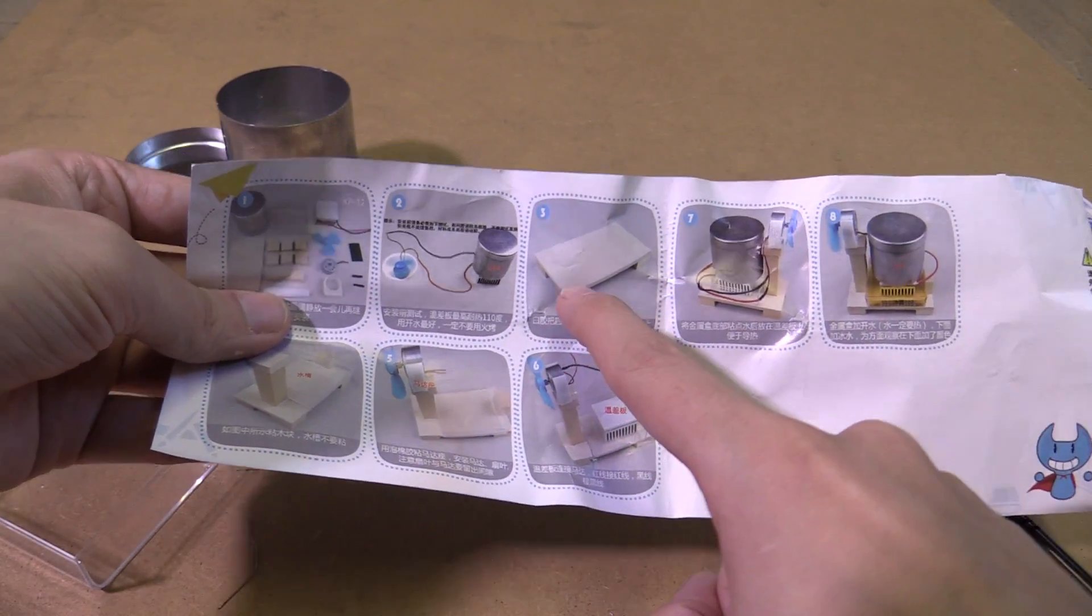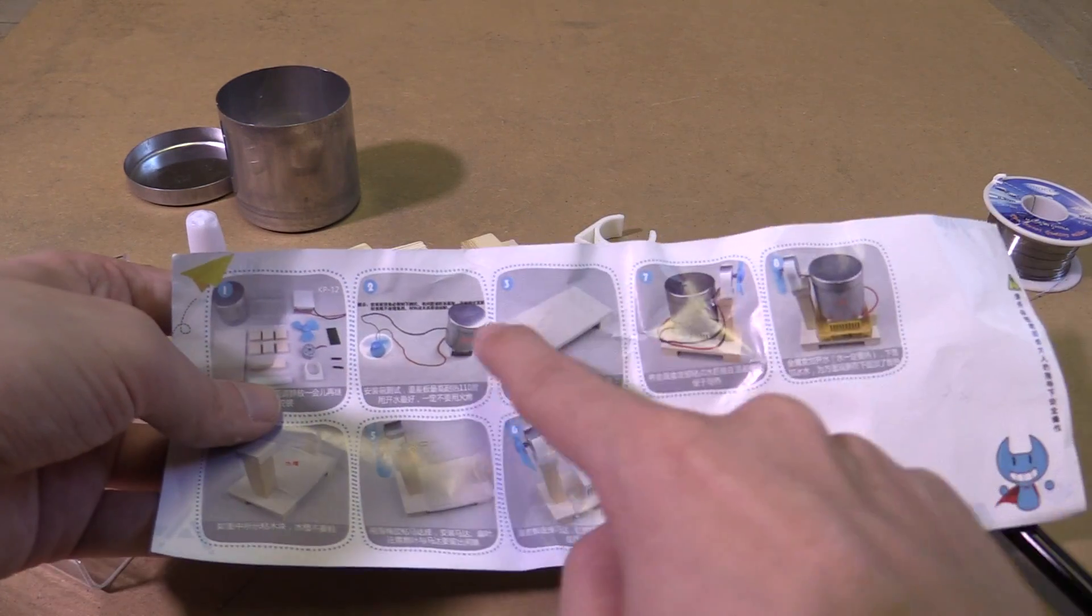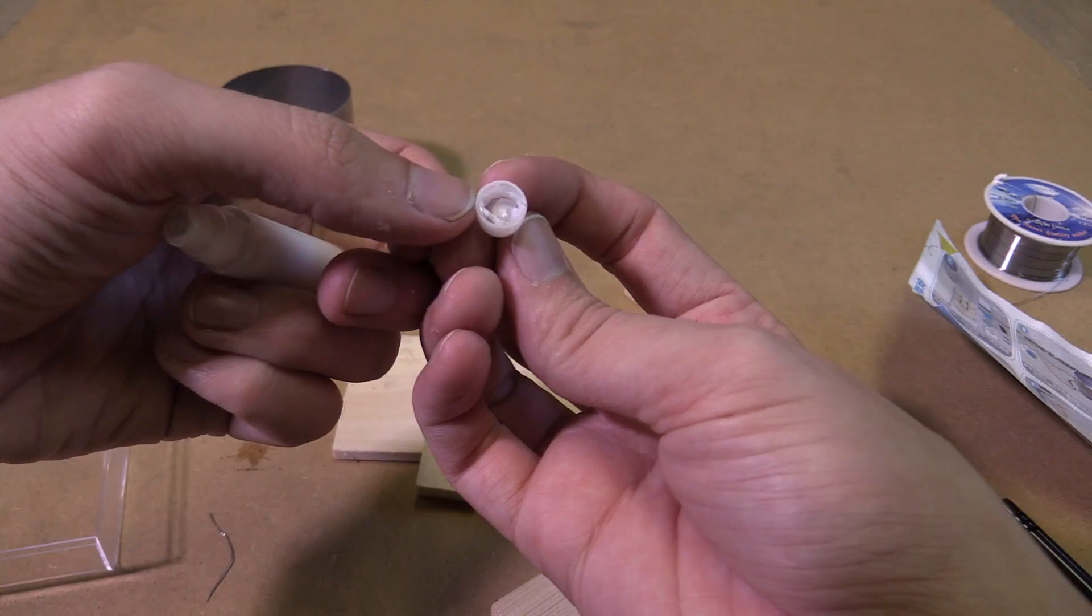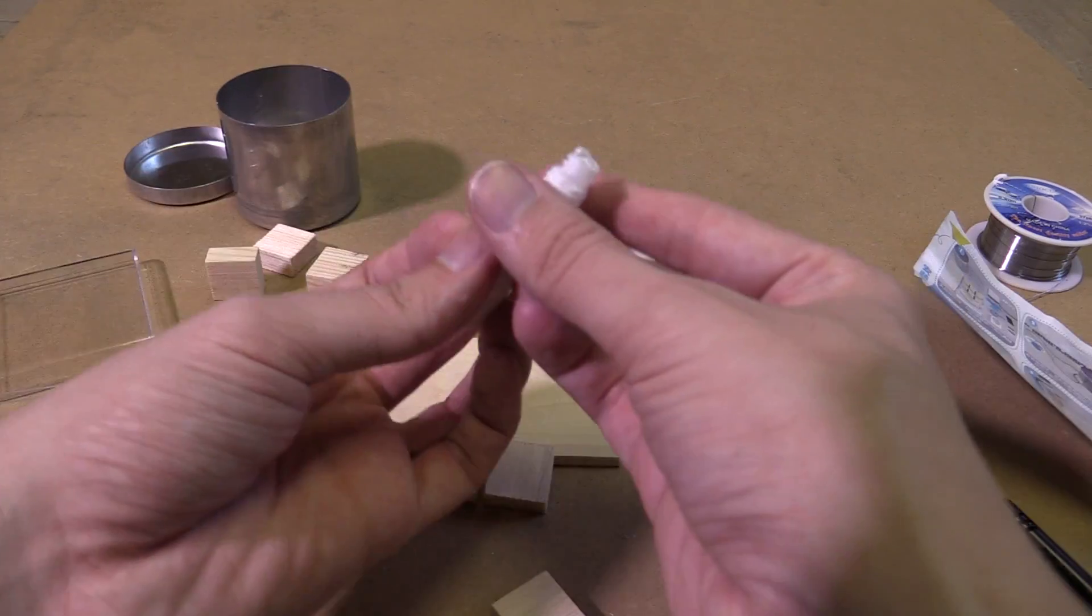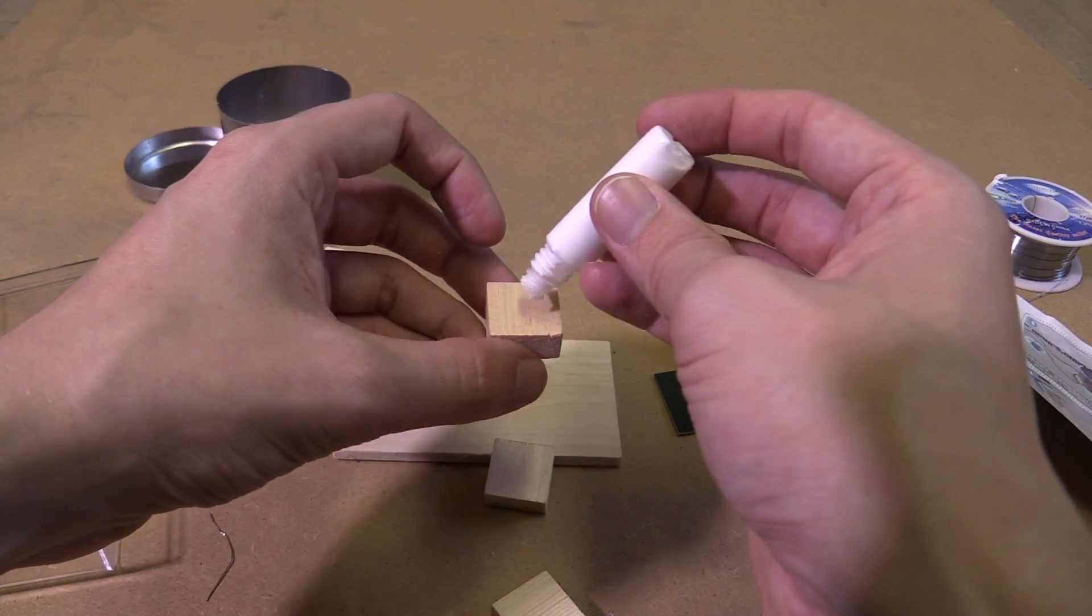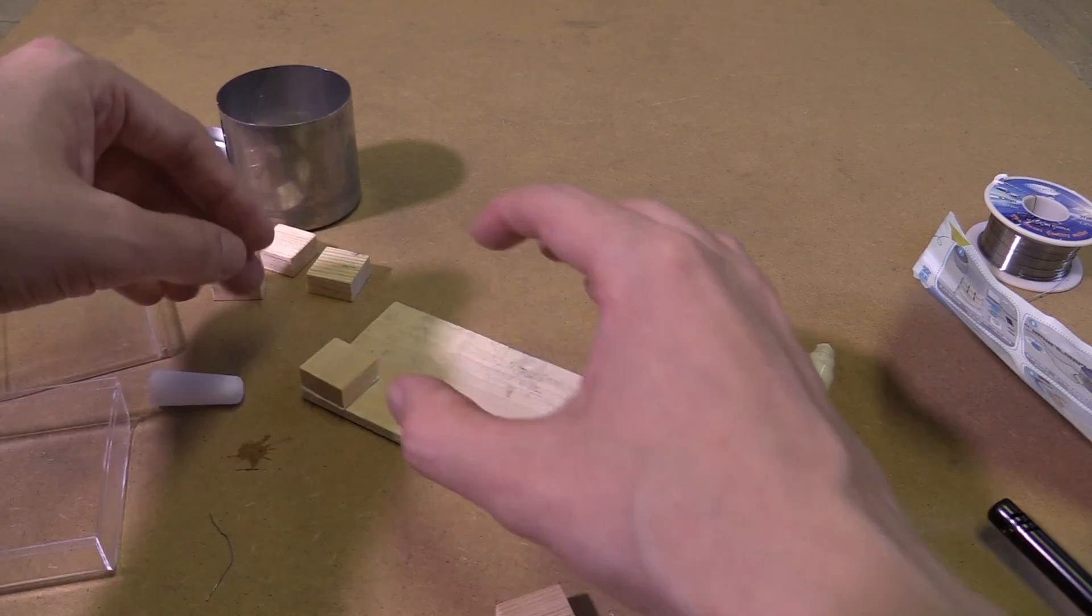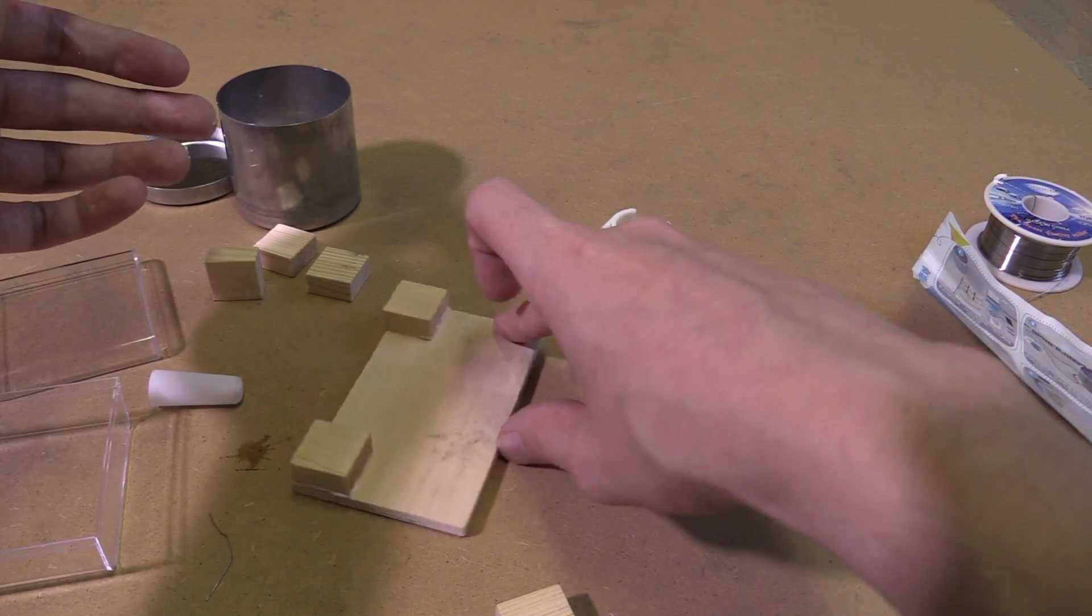So the next step is to glue these little blocks onto the bottom of this bigger block to make a platform. So let's go ahead and do that. Okay so you can see it's all blocked up with glue so it's not a good start. Anyway let's just squeeze it straight from the tube. I guess this is really meant more for kids than adults but we can have some fun doing it anyway.